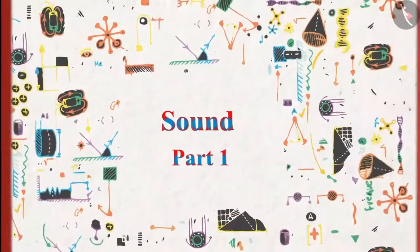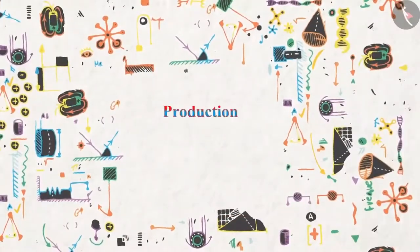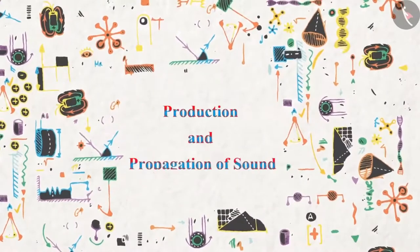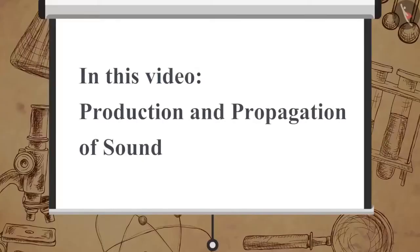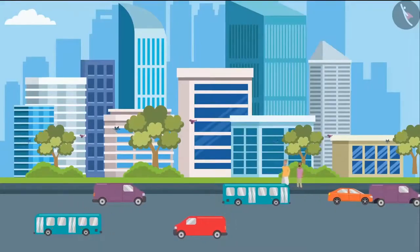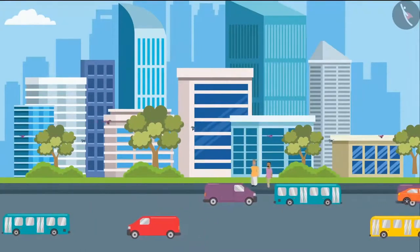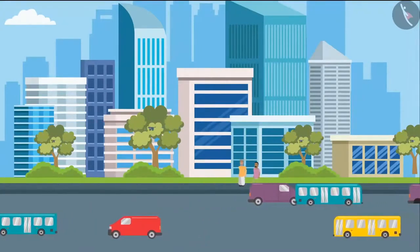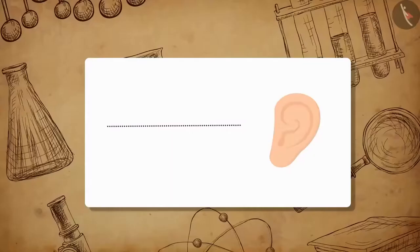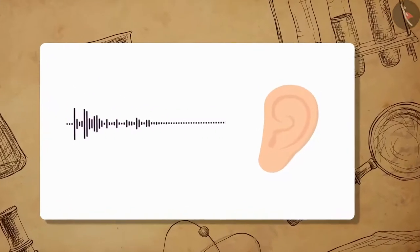Sound, Part 1: Production and propagation of sound. In this video we will get an introduction to production and propagation of sound. From the sound of the birds chirping to the sound of the running vehicles, we are surrounded by various sounds. Sound is a form of energy which travels through a medium and creates a sensation of hearing in our ears.